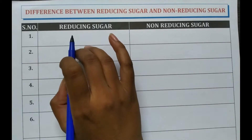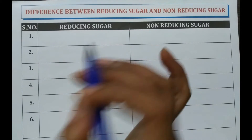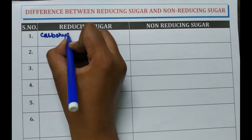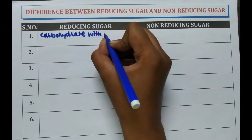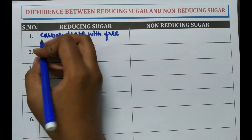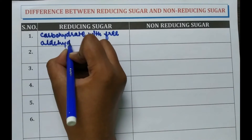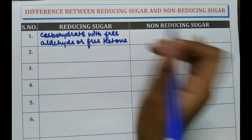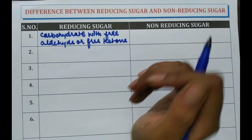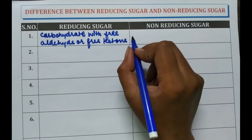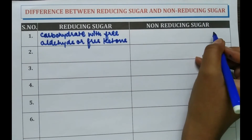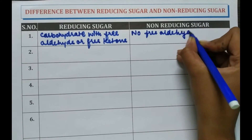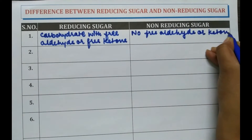Reducing sugar is the sugar which has a free aldehyde or free ketone group. That is, reducing sugar is a carbohydrate with a free aldehyde or free ketone. Whereas, carbohydrate in which the free aldehyde or ketone group is absent is known as non-reducing sugar — no free aldehyde or ketone group is present.